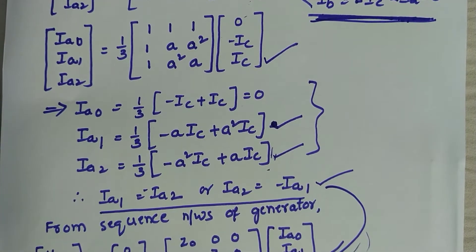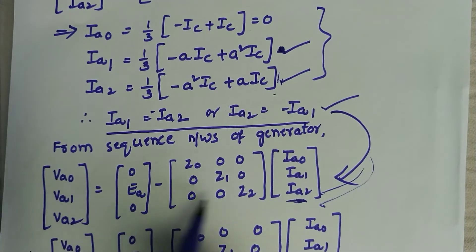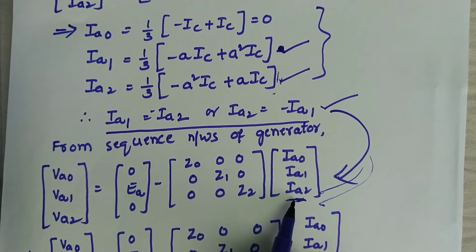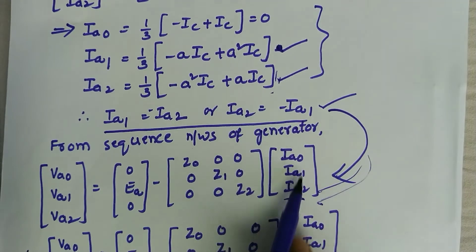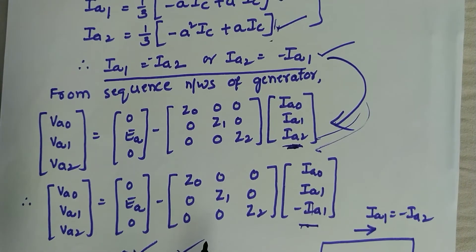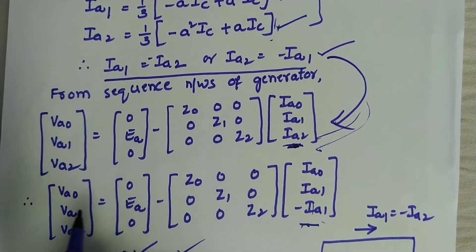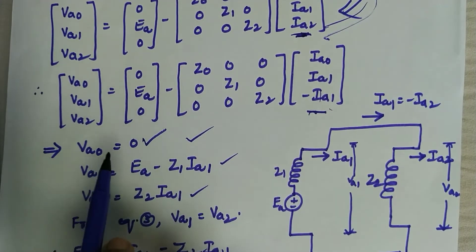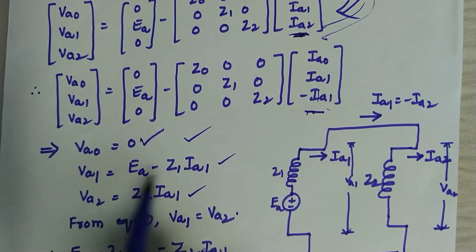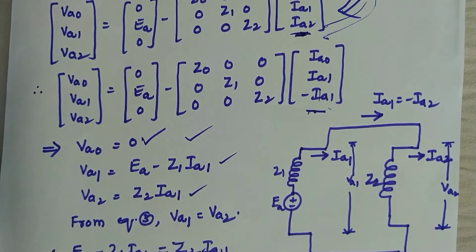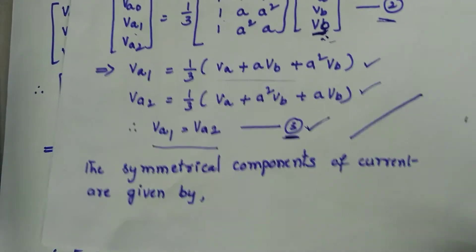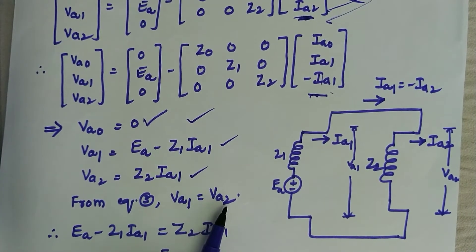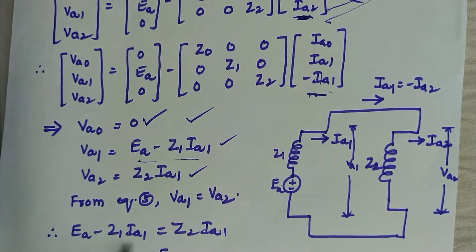Now we consider the sequence networks of the generator. Substituting the condition Ia2 equals minus Ia1 into the sequence network equations and converting to normal equation form, we get Va0 equals 0, and relations for Va1 and Va2. The third equation gives Va1 equals Va2.